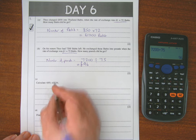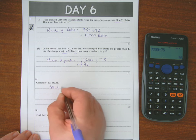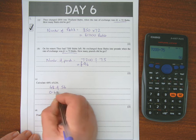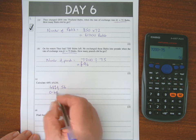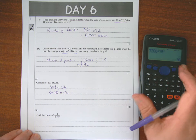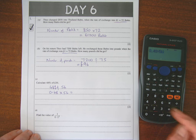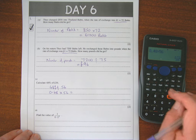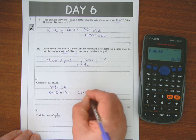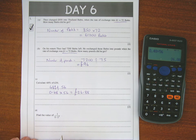48% of 56. So this is a calculator paper. And 48% I write as 0.48. Of is times 56. And that gives me 26.88. And that's pounds. So that's pounds and pence.